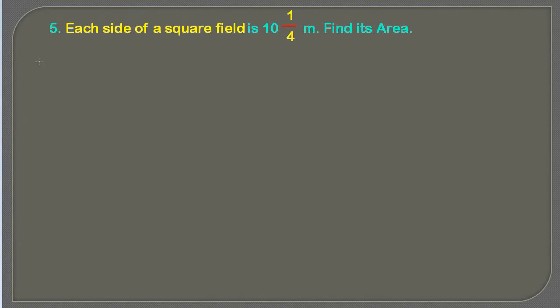Hi friends, today in this video I'm going to solve question number 5 of exercise 2.2, class 7th CBSE. The question is: each side of a square field is 10 and 1/4 meters, find its area.